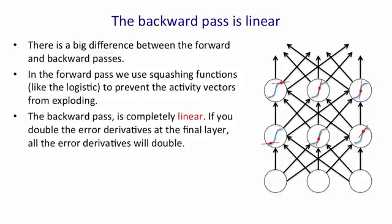The backward pass, however, is completely linear. Most people find this very surprising. If you double the error derivatives at the final layer of this net, all the error derivatives will double when you backpropagate.